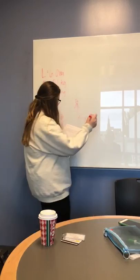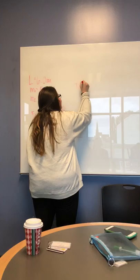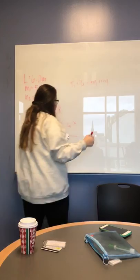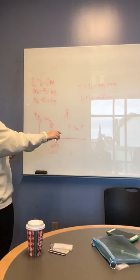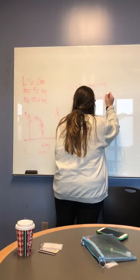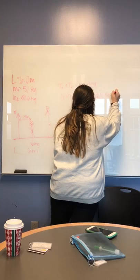You have t1 plus t2 equals the mg of both. So that is 81.6 kg, which is the mass of the guy, times 9.8, plus 51 kg times 9.8, which is the mass of the plank. That equals 1299.48 newtons.